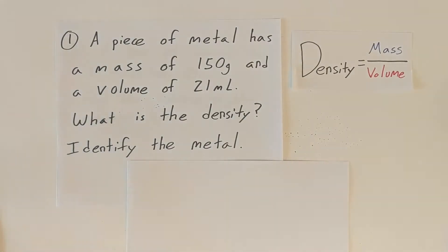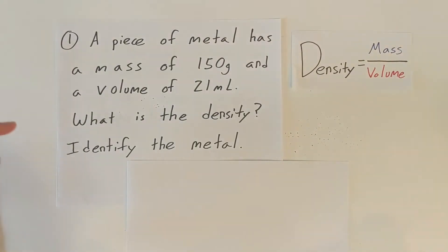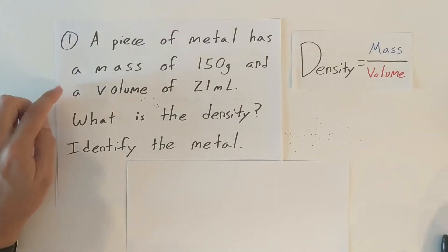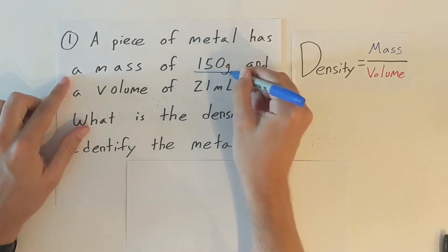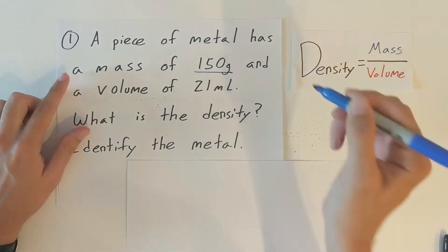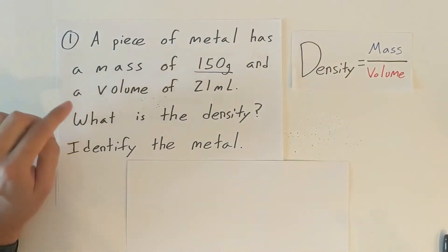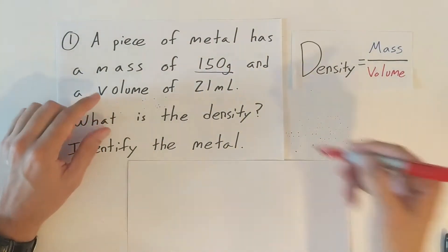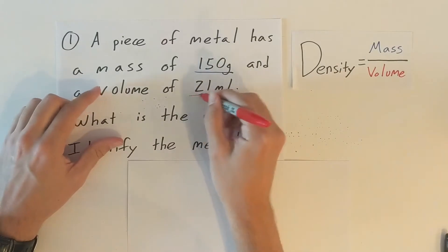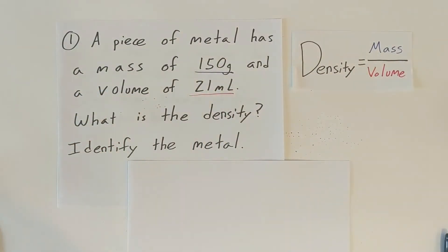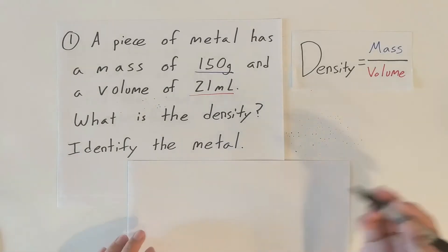We are going to be doing a few practice problems. Our first practice problem: a piece of metal has a mass of 150 grams and a volume of 21 milliliters, so we can just write that directly into our density equation.